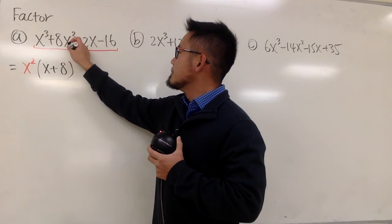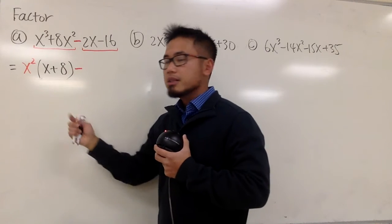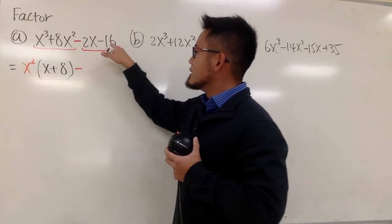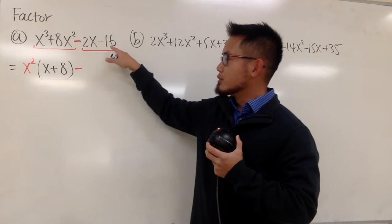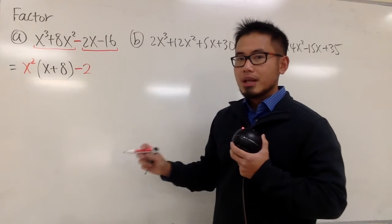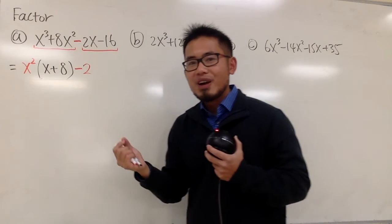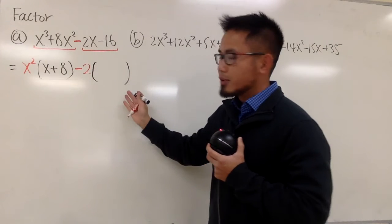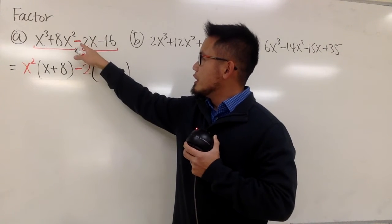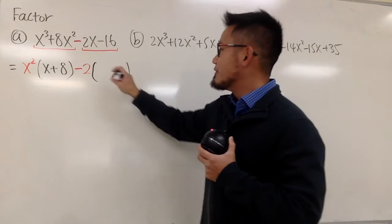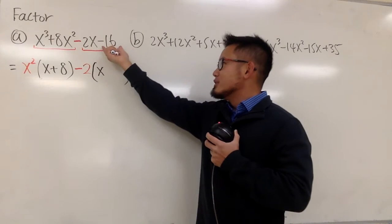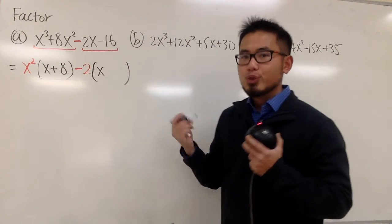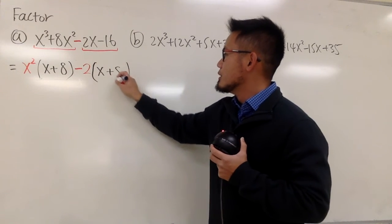Pay attention to what this sign is — this is a minus in between. You have to make sure you bring that down right away, because you have the first part minus the answer of the second part. Here we have 2 and 16. We know that 2 goes into both, so we can factor out 2. But because it was a minus earlier, we are technically factoring out a negative 2. Originally it was negative 2x, but we factored out negative 2, so we have a positive x left inside. And originally this was negative 16 — think about it as negative 16 divided by negative 2, which gives us positive 8.